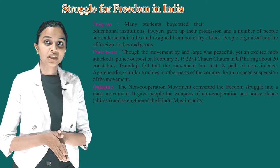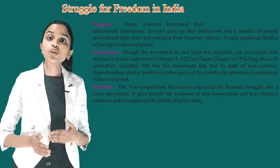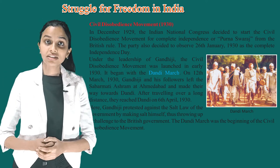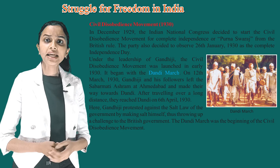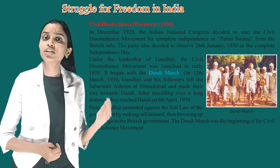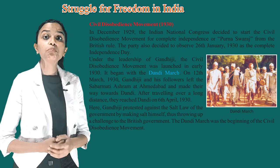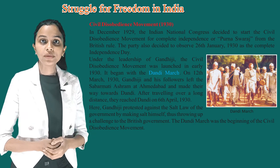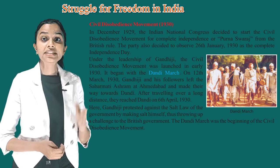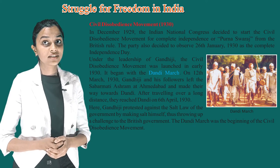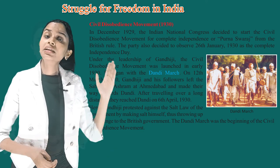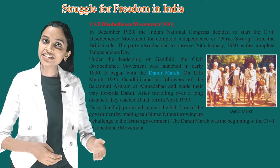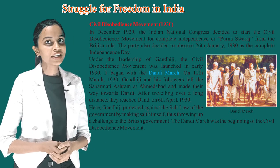Civil Disobedience Movement 1930: in December 1929, the Indian National Congress decided to start the Civil Disobedience Movement for complete independence, or Poorna Swaraj, from British rule. The party also decided to observe 26th January 1930 as Complete Independence Day. Under the leadership of Gandhiji, the Civil Disobedience Movement was launched in early 1930, beginning with the Dandi March.